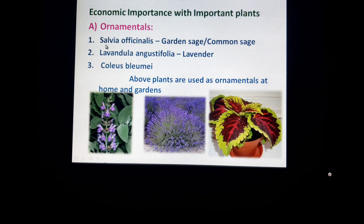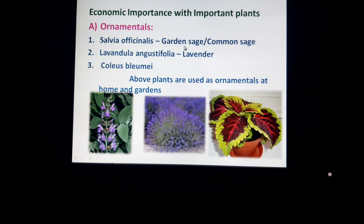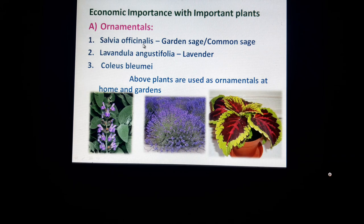In ornamental plants, we have to observe some plants with beautiful flowers. The first is Salvia officinalis, commonly called garden sage or common sage. In Salvia officinalis, we can observe the lever mechanism in pollination.